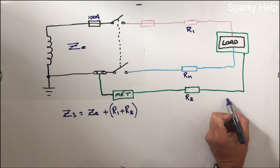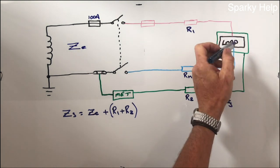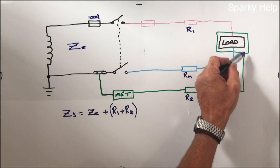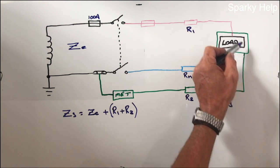We can work out the fault current. This would be a fault if it were to occur at this location here, from line to earth.